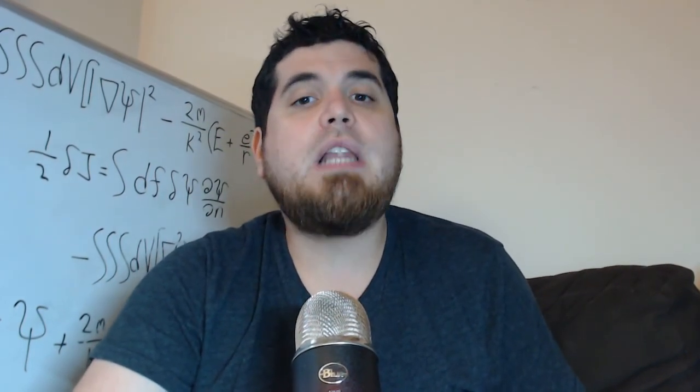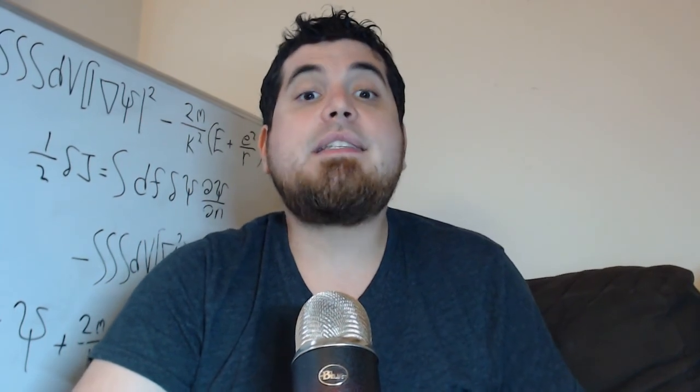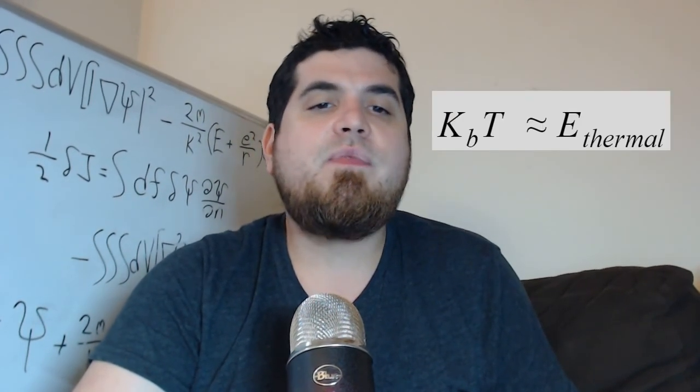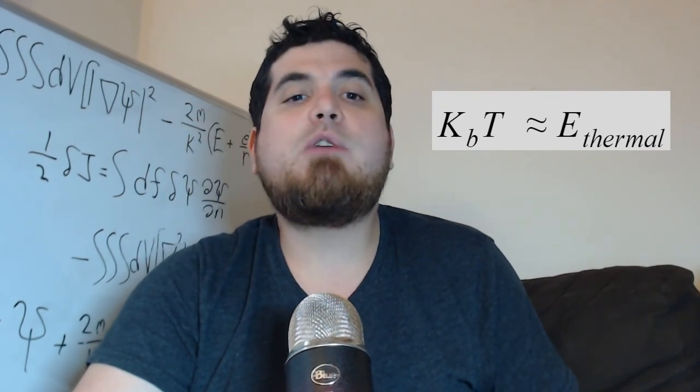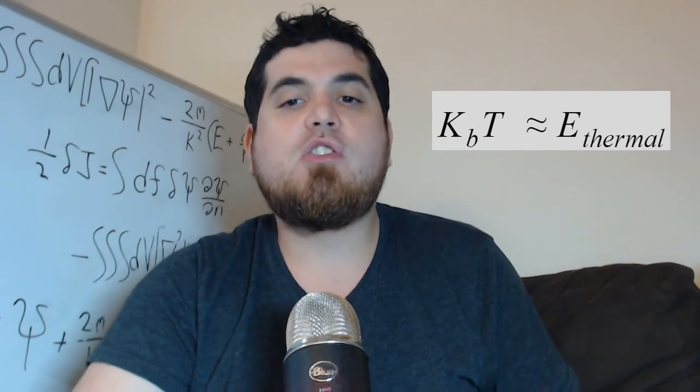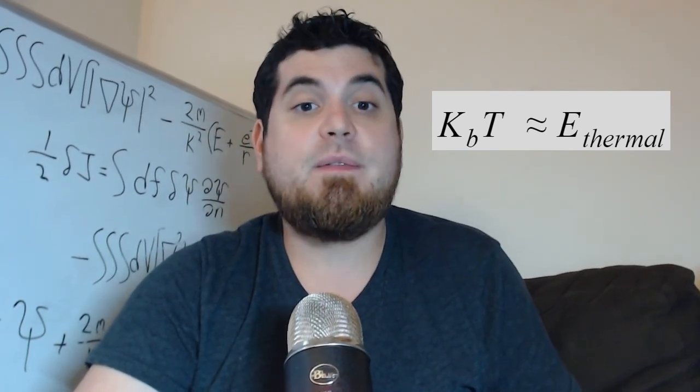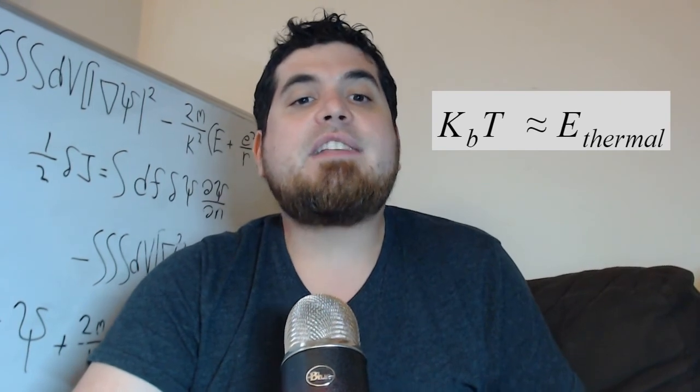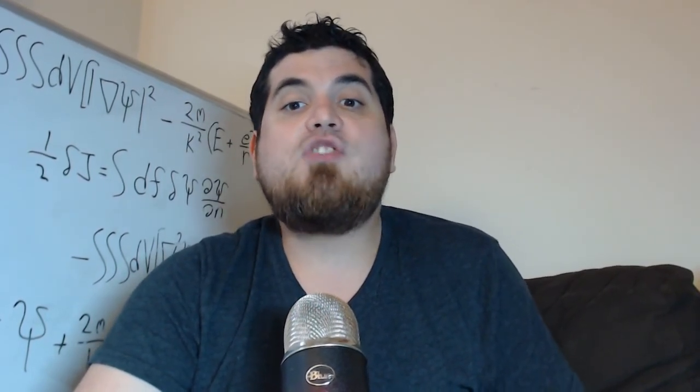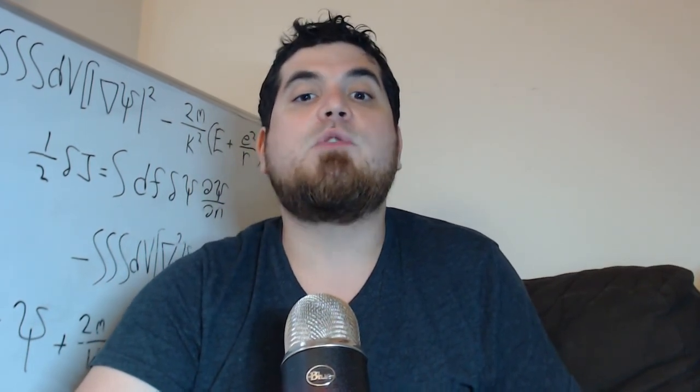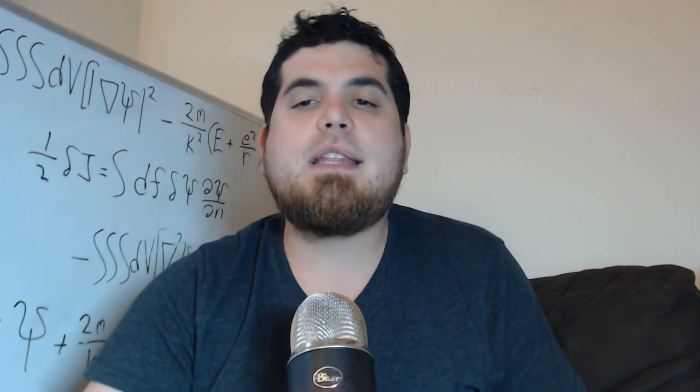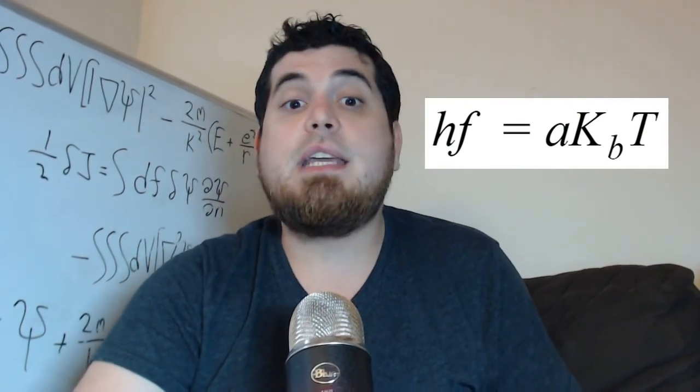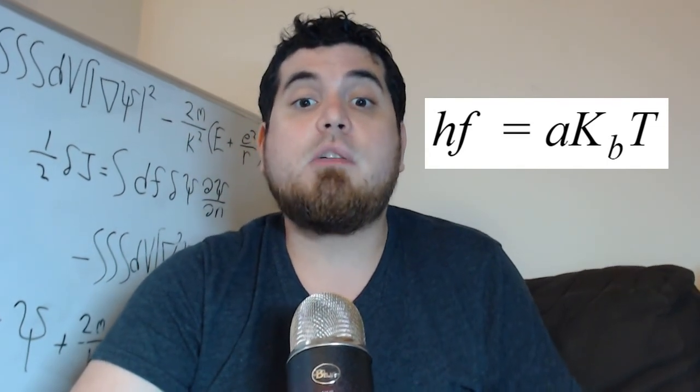There I also spoke about how thermal energy, random energy that a system has simply because it's not at absolute zero, fits in with our E equals HF law. And the way that worked was that the equation KT is approximately equal to E allows us to estimate the random thermal energy that a system has based on the temperature T and tells us in light of E equals HF that because this system has random energy E, it's also going to be randomly emitting or absorbing light. In general, the light emitted due to random thermal processes will span a broad spectrum. But the peak of that spectrum, the largest amount of energy emitted will be at a frequency such that the photon energy HF is approximately equal to a constant of order one times the random thermal energy KT.